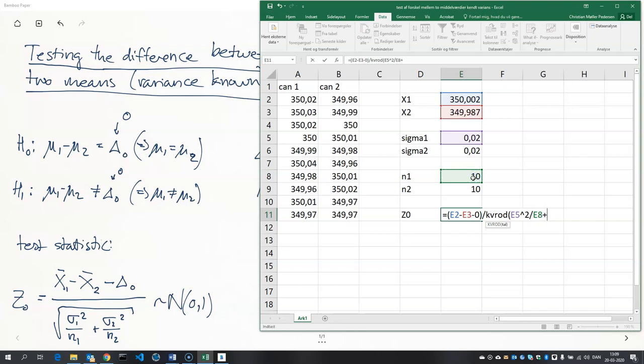And then the second standard deviation squared, divide by the sample size, and that gives us a test statistic of 1.67.